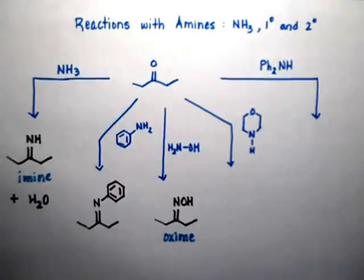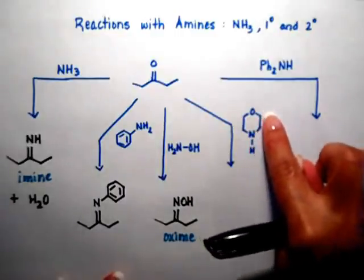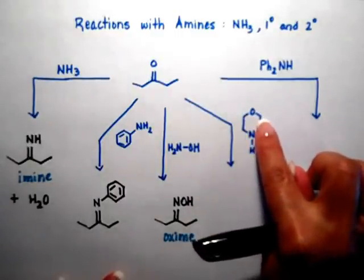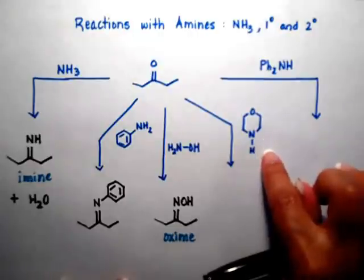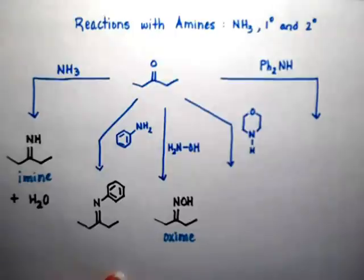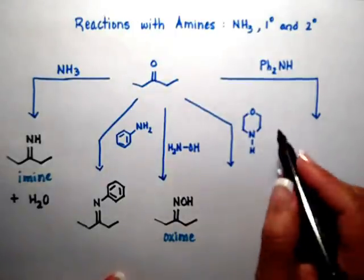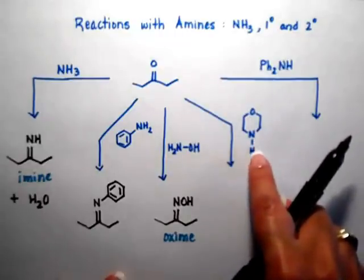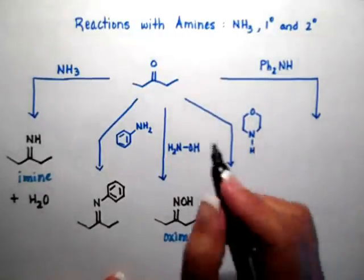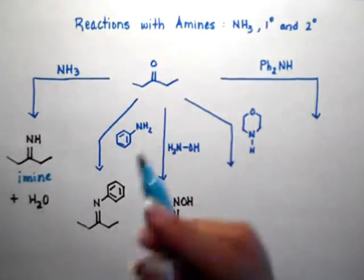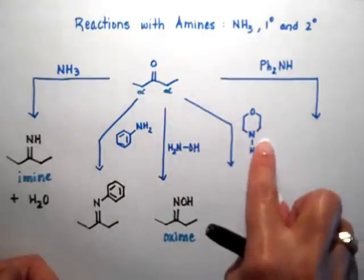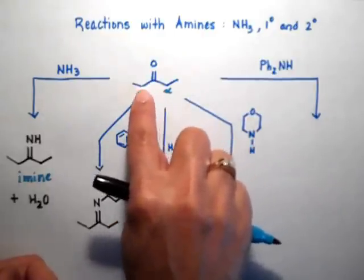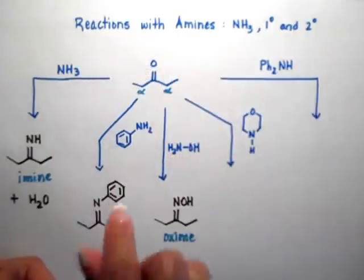Whenever we do the different types of imines, they also have different names. Now, this molecule right here — notice I have an ether at the top; ethers don't react. I have a nitrogen, and how many hydrogens are attached to my nitrogen? I only have one. So if I have one, I'm going to have to get a second hydrogen somewhere to form water. This is when you form an enamine. When your nitrogen has only one hydrogen, we are going to shift the double bond towards one of the alpha carbons — the alpha carbons are the carbons directly attached to the carbonyl.